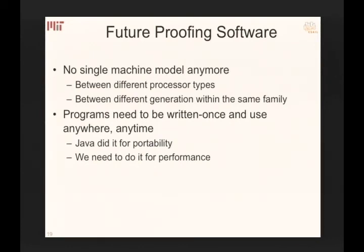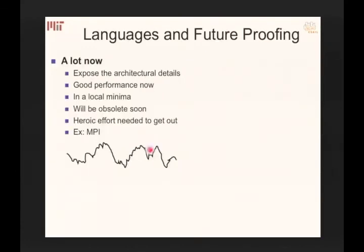We got functional portability with Java's 'write once, run everywhere,' but we need performance portability, which is really hard. At write time, there's a tension: to get good performance, you expose architectural details all the way down and write code that runs really well. But that puts you in a local minimum — if the next machine requires something different, there's no way to get there automatically.